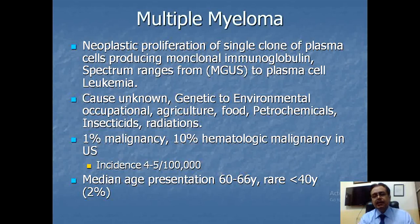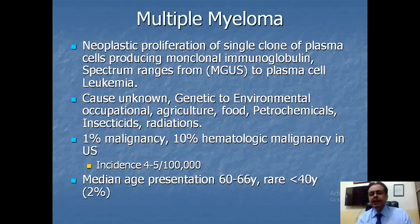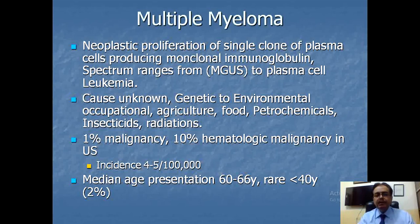Different propositions have been considered as causes of multiple myeloma, ranging from genetic to environmental, occupational to agricultural factors. Sometimes food products are also implicated in the genesis of multiple myeloma. Petrochemical products, insecticides, and radiation certainly have a heavy relation with causation. Overall, multiple myeloma represents 1% of all malignancies in the United States and 10% of hematological malignancies.